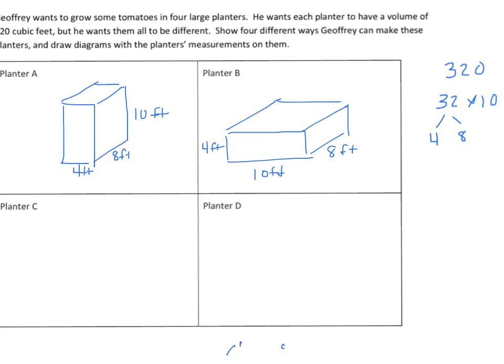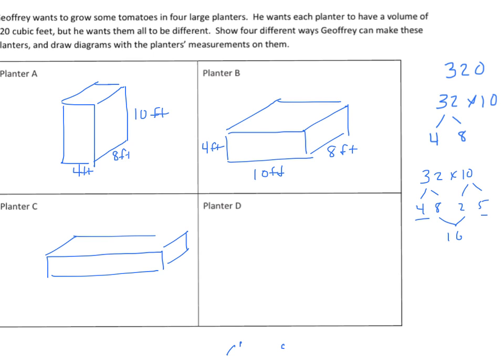We can do other things as well — we can further decompose some numbers. We have 32 times 10, which gives us 4 and 8 times 2 and 5. We can combine these in different ways using the commutative property. What about 4 times 16 times 5? We'll make this container wide: 16 feet by 5 feet by 4 feet in height. Breaking these down into factors is a very simple way to do this.